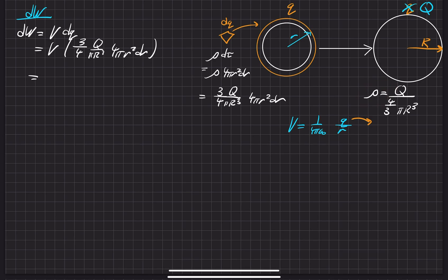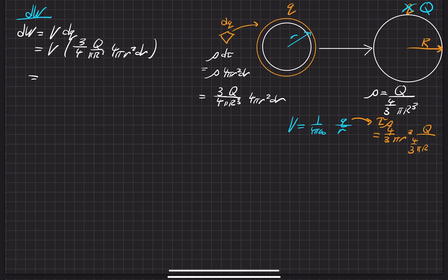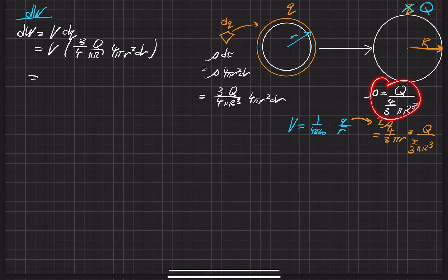We need to rewrite little q in terms of known quantities. We know q = ρ·τ (density times volume), where τ is the volume (using τ to avoid confusion with potential V). So q = (4/3)πr³ times ρ, where ρ = Q / ((4/3)πR³). We use big R in the density because we want the same charge density as the final sphere, ensuring the total charge equals Q when we reach radius R.